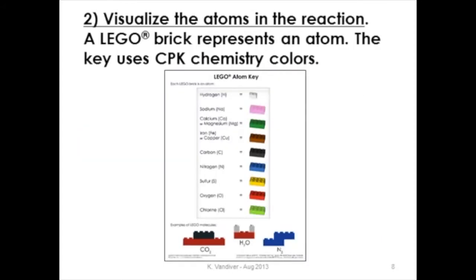One of the really strong suits of the lesson is that we visualize the atoms in the reaction by using these inviting Lego bricks. Each brick represents an atom, and these colors down the side are the standard CPK chemistry colors. Down here we have shown how atoms can be snapped together as bonded atoms would be in a molecule — CO2, water, and nitrogen — as particular shapes.